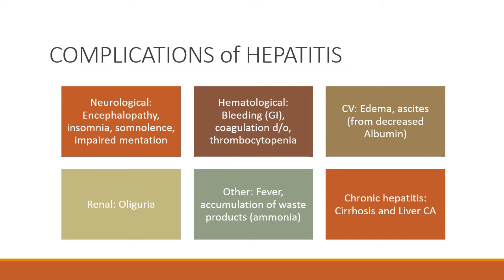Cardiovascularly, we see edema and ascites from decreased albumin and from fluid third-spacing into the GI tract. On the renal system, we get oliguria — poor urine output. Other complications include fever, accumulation of waste products, especially ammonia, and that further contributes to neurological problems.